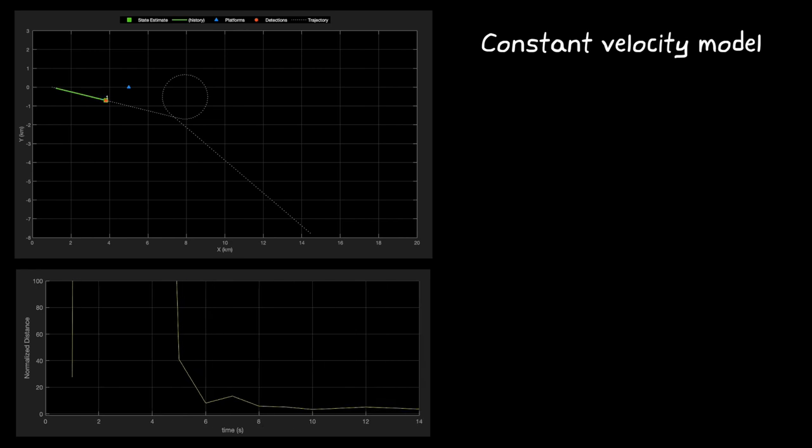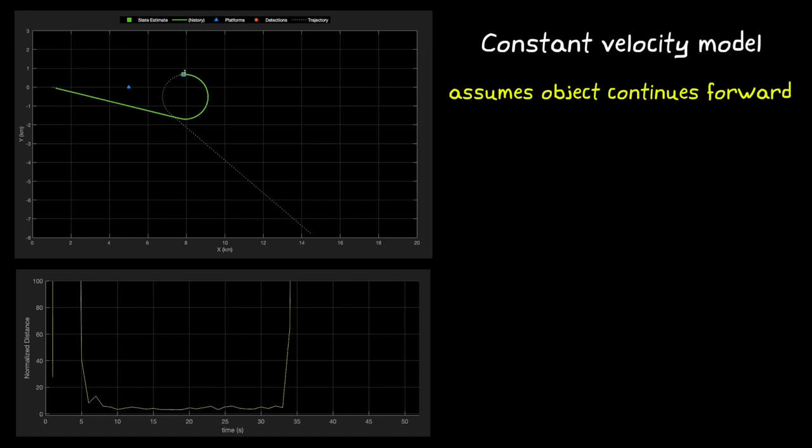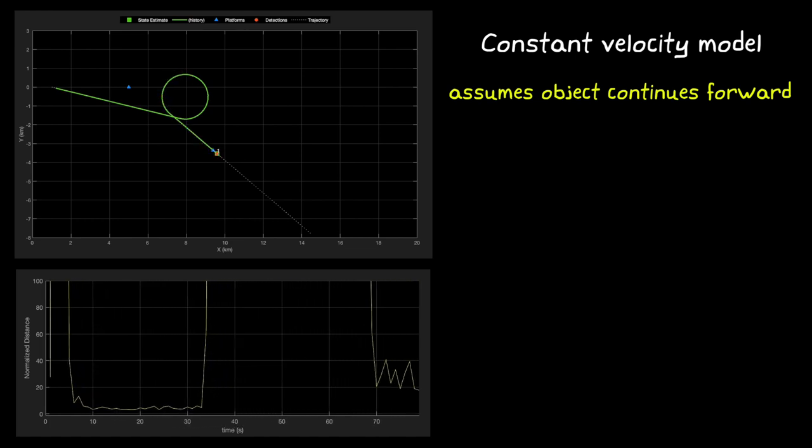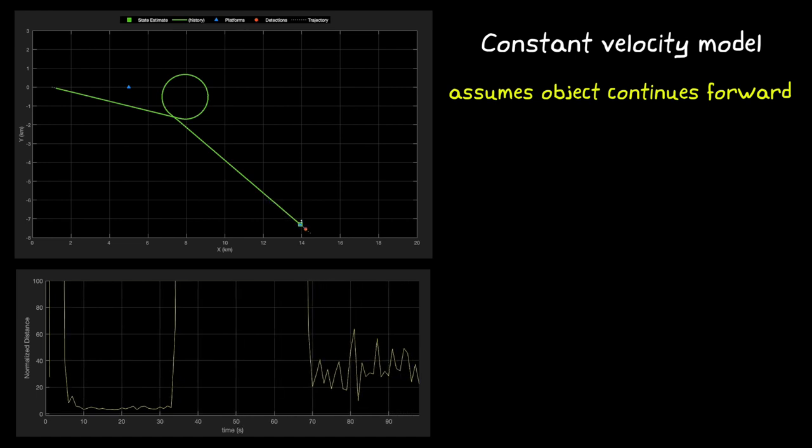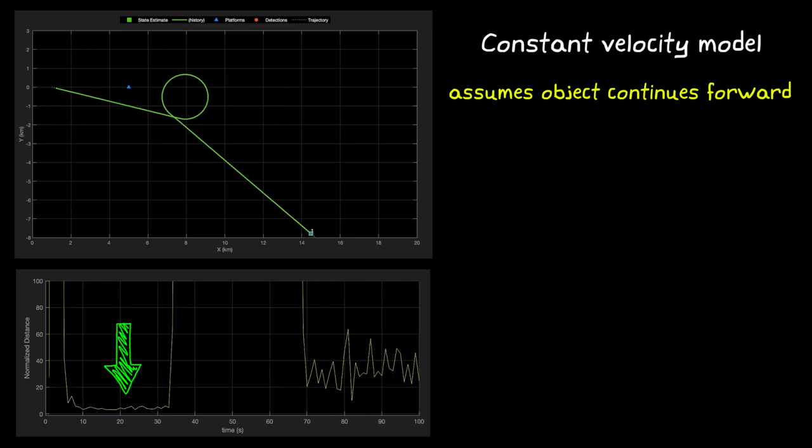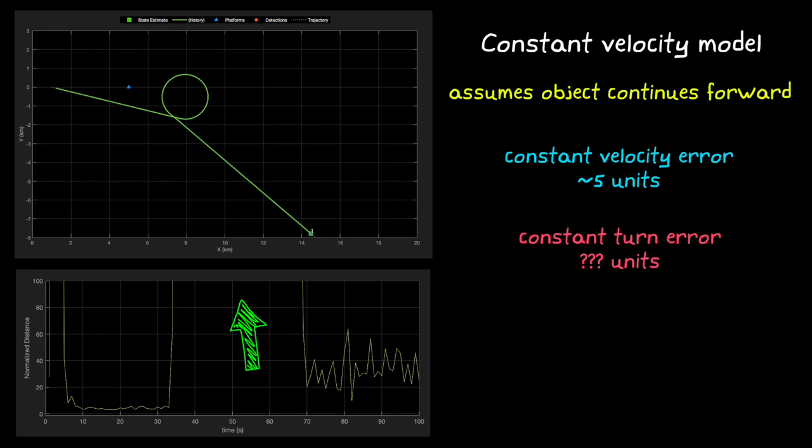The model that this filter is using is a constant velocity model. So it's predicting the future state under the assumption that the object continues forward at a fixed speed. So if we look at the normalized distance now, you can see that it does a great job when the object is moving at a constant velocity, maybe about 5 units of error or so. But the error increases dramatically during the constant turn portion. I don't even know how bad it gets, it's way off the chart. And it's about 30 units of error during the constant acceleration section. So with a single model, our prediction is great if the object actually performs that motion. But it falls apart if the model doesn't match reality.